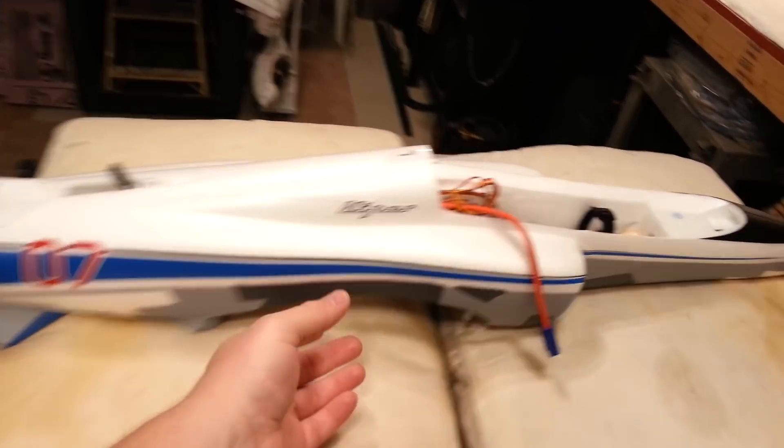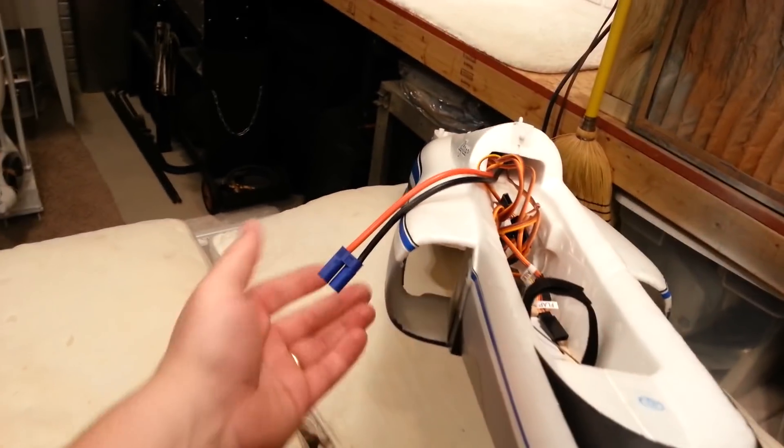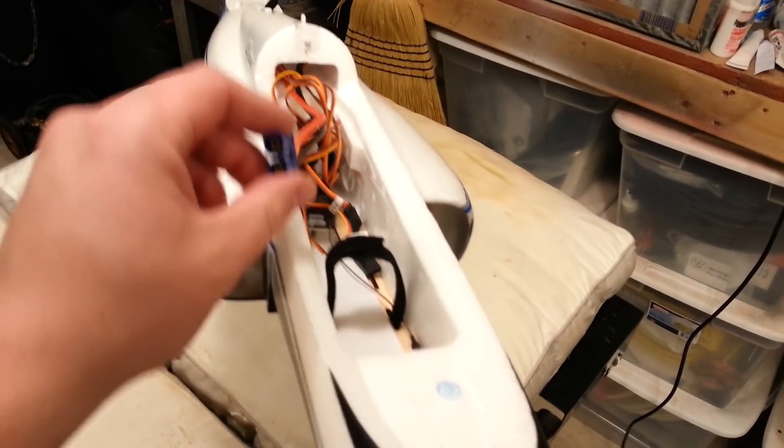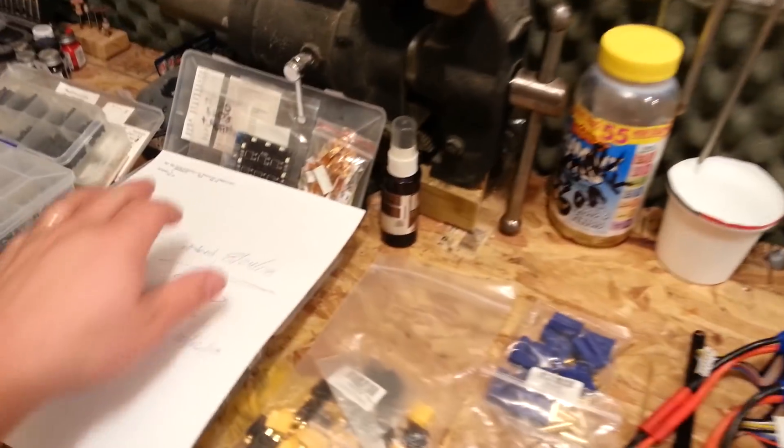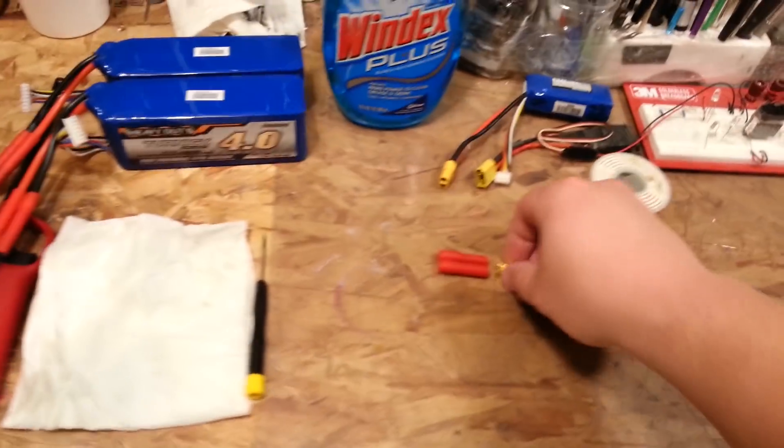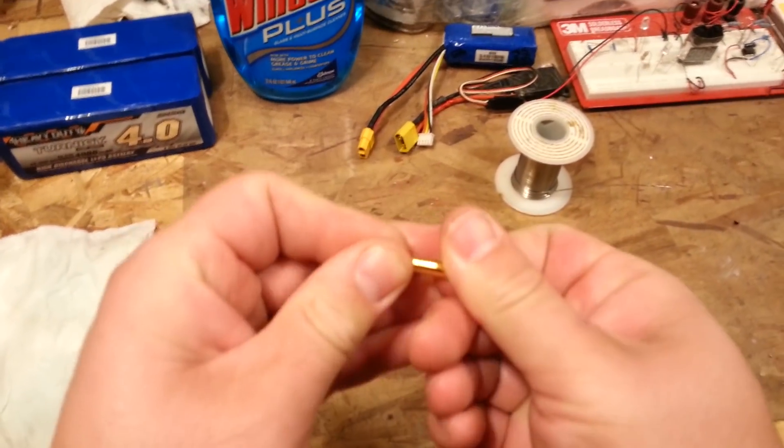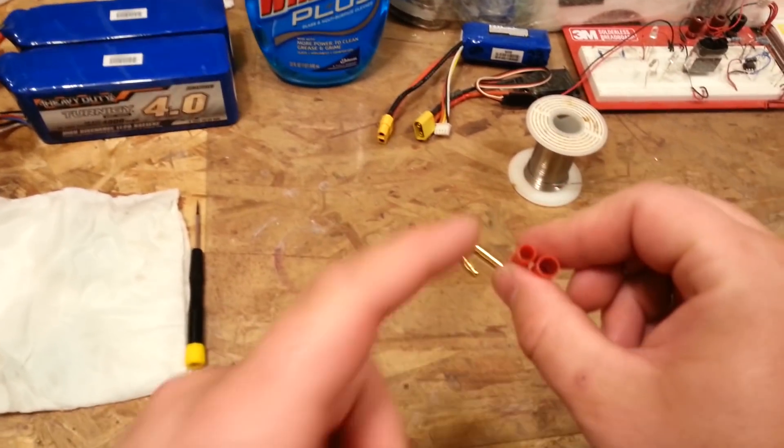All right folks, we got the PiperJet here, 1.1 meter with a 70 millimeter EDF, and we need to switch this EC5 off of here. I don't use EC5s, I don't like them for a variety of reasons. So what we're going to be replacing with is the HXT four millimeters, which has got a four millimeter plug set, one male, one female.